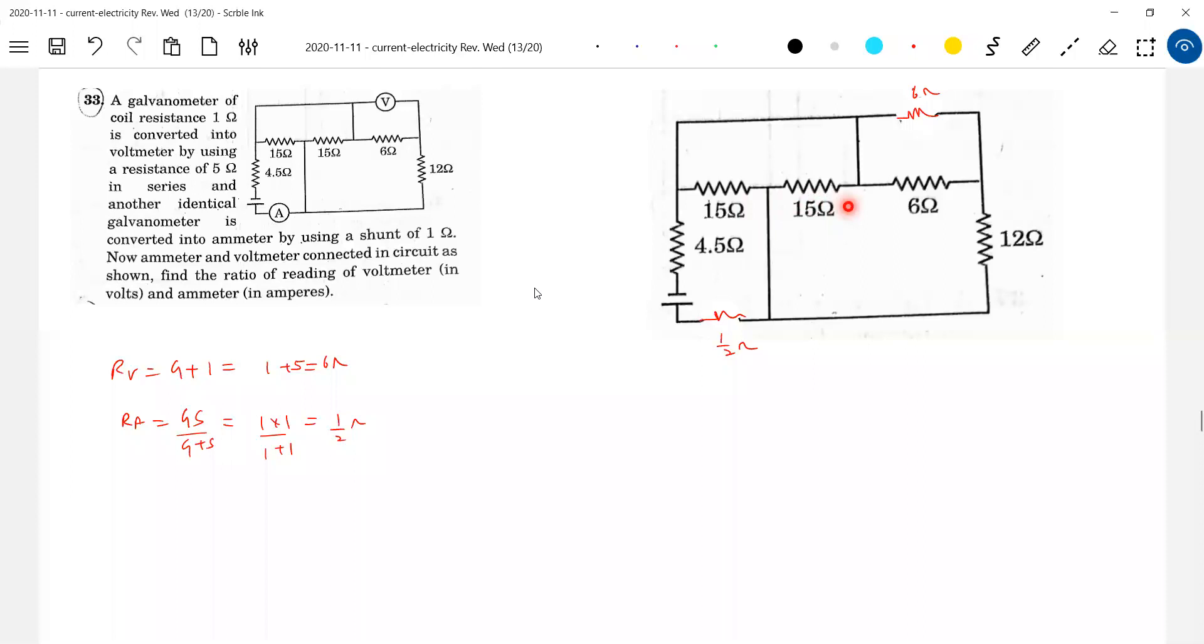Okay, I think all these three will become parallel with the 0.5. I'll draw the equivalent circuit just making some observation.